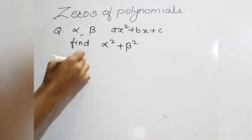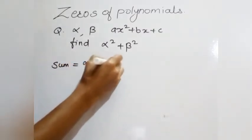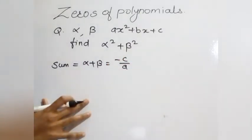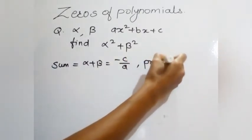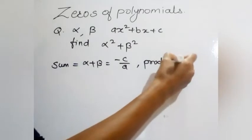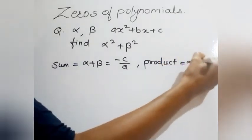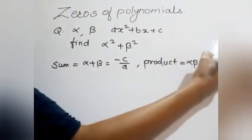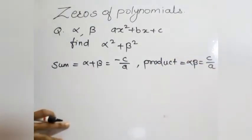The sum of zeros — alpha plus beta — is equal to minus b upon a. And the product of zeros — alpha into beta — is equal to c upon a, that is, constant term upon coefficient of x square.